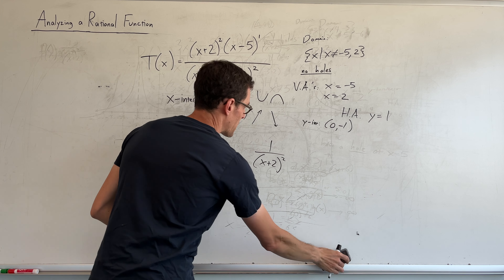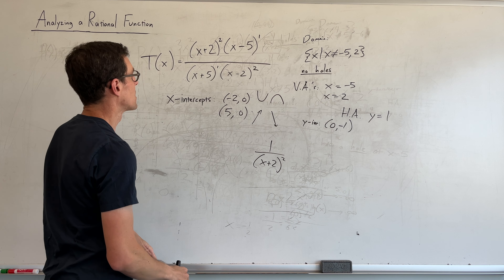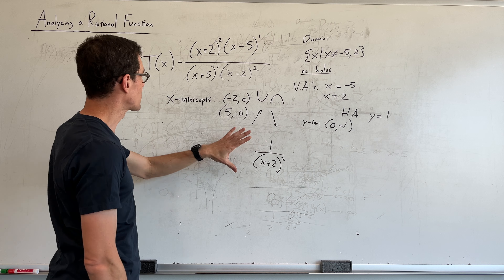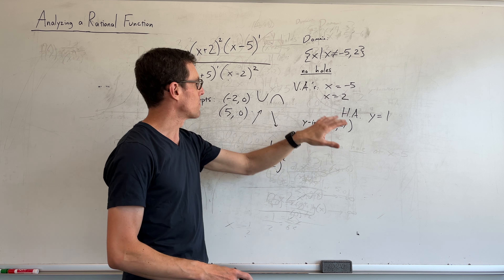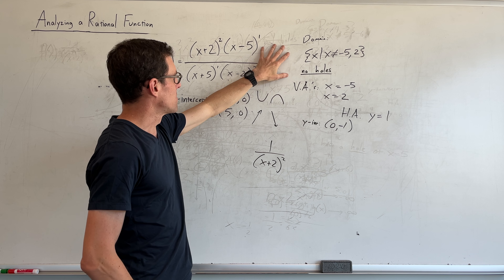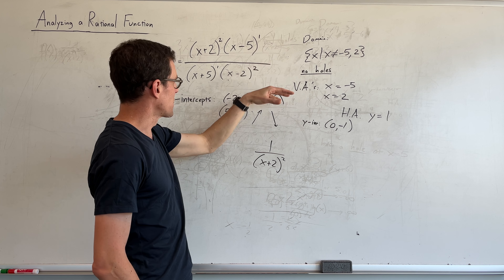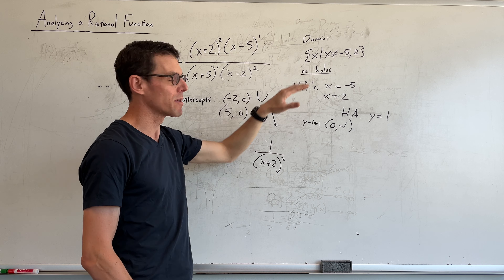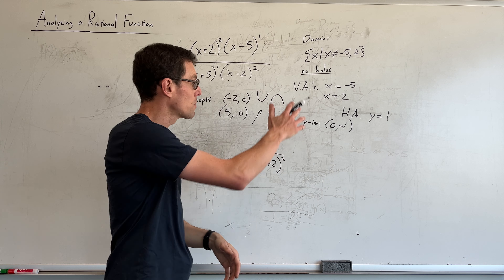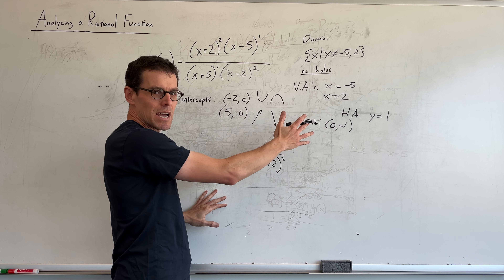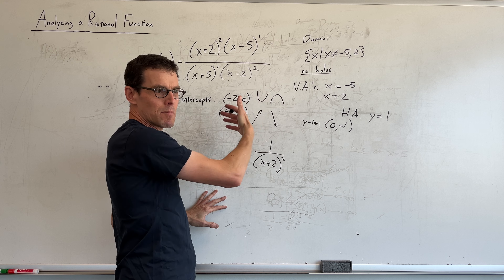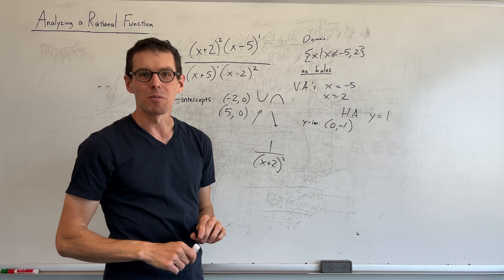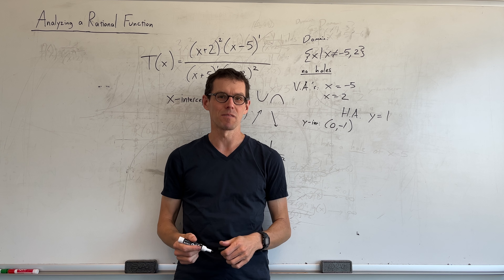In our next video we are going to bring all of these skills to bear on actually sketching pretty decent graphs of rational functions from their equations. Just to recap: if you consider a rational function, factor it as much as possible, and you have all this insight even before you start drawing — you know the domain restrictions, vertical asymptotes, horizontal asymptotes, potential holes, the behaviors around x-intercepts, and the behaviors around the vertical asymptotes. So in our next video we will put all this together and graph these functions.